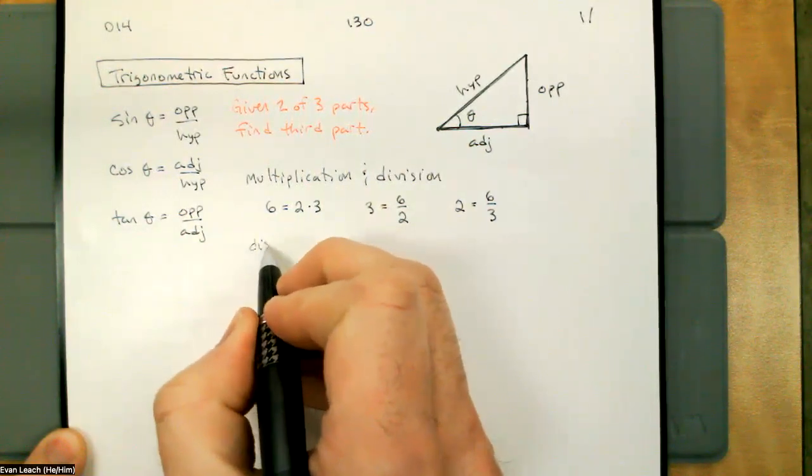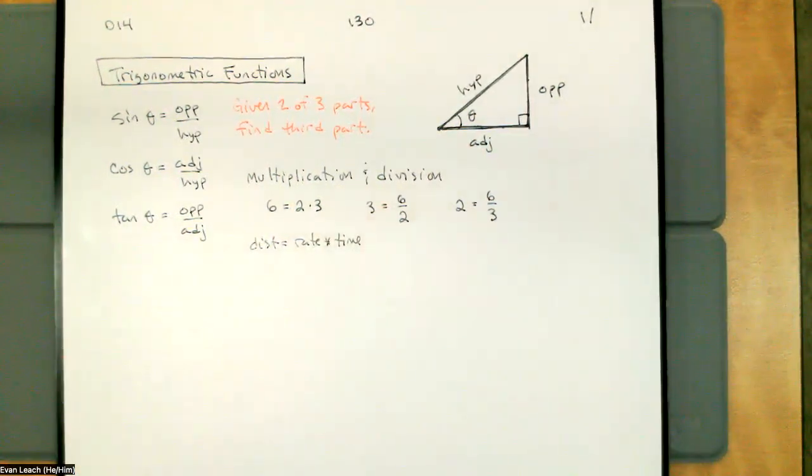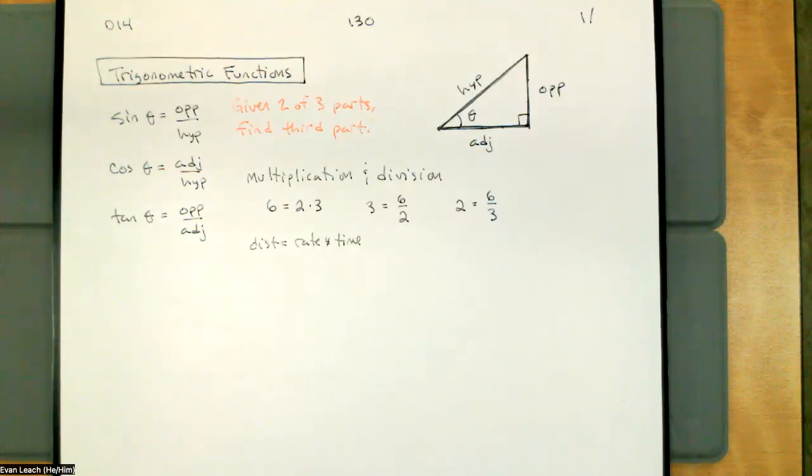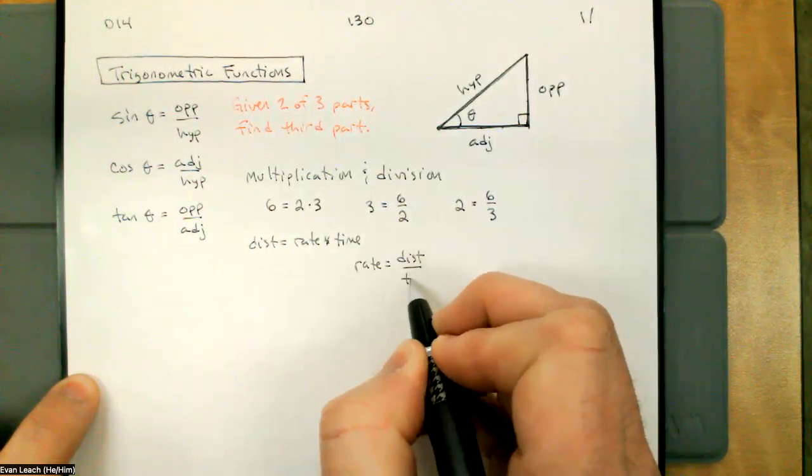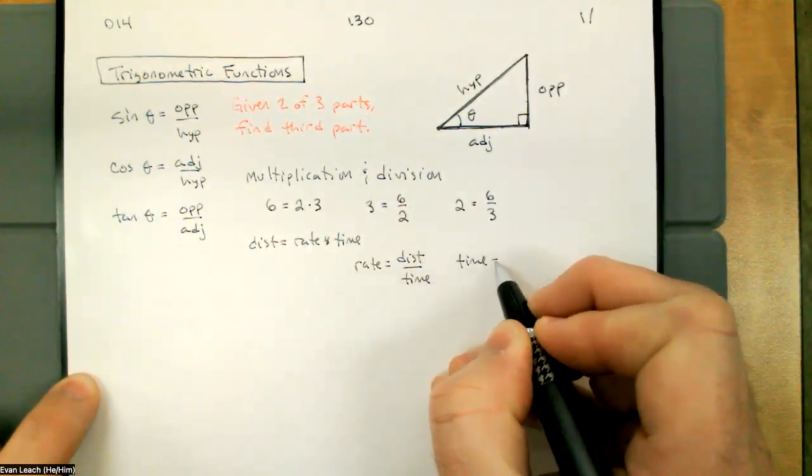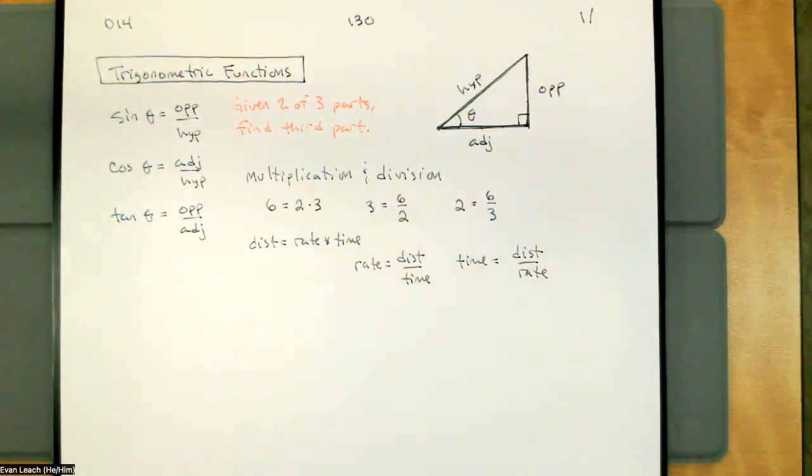This is all just variations of six is equal to two times three. The one we used before was distance is equal to rate times time. So I can solve this for rate and time. It's just a two out of three game again. If distance is equal to rate times time, that means rate is distance divided by time, or time is distance divided by rate. If I drove 400 miles in five hours, I was averaging 80 miles per hour. If you remember one of them, you get the other two by understanding how multiplication and division work.